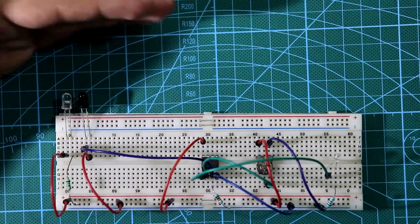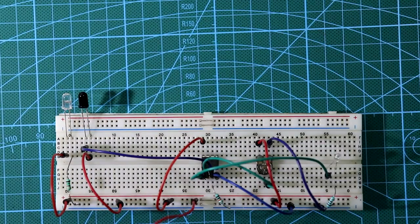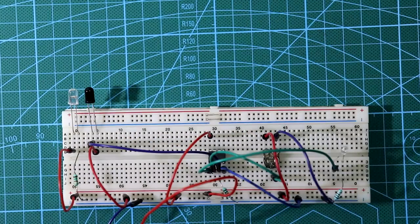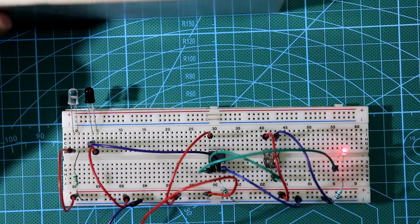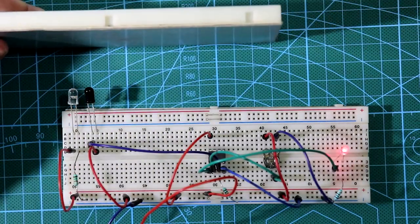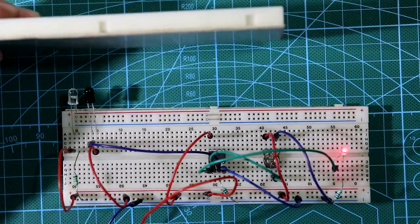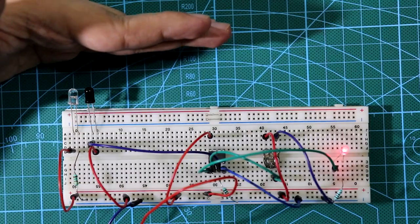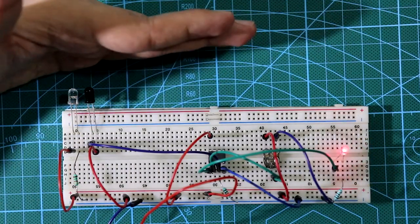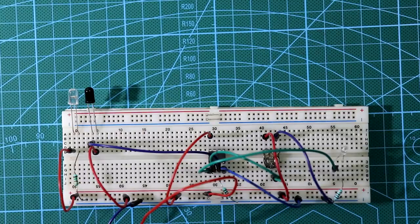Now connect power supply, plus VCC and ground. Let's see whether this LED will glow or not. It is glowing, right? If I keep like this, this output LED is glowing. So our proximity sensor is working.